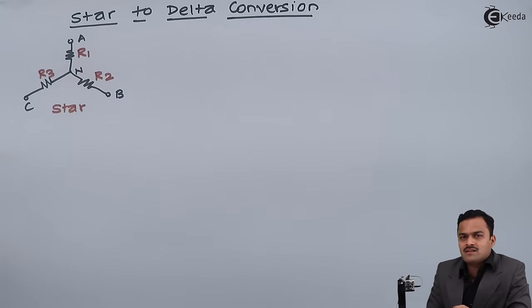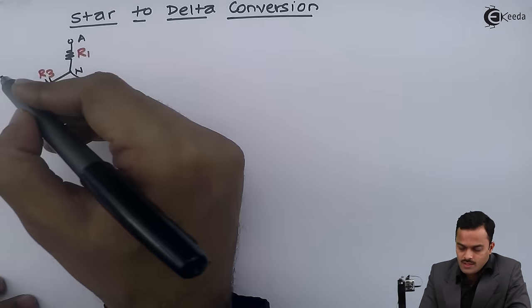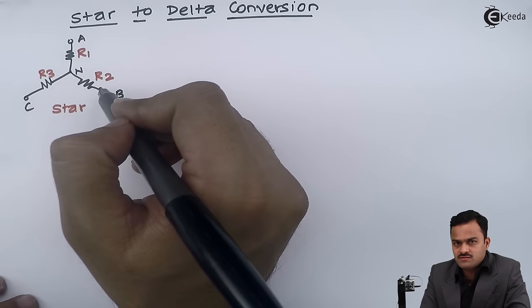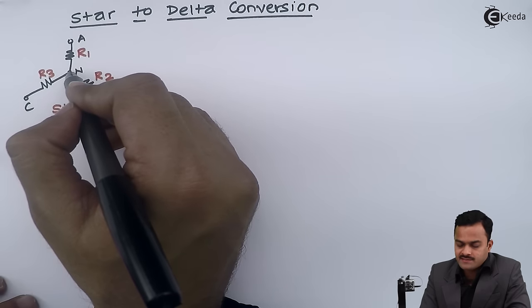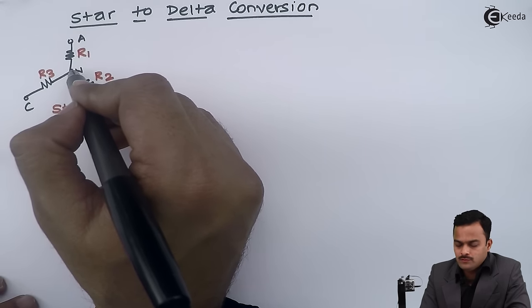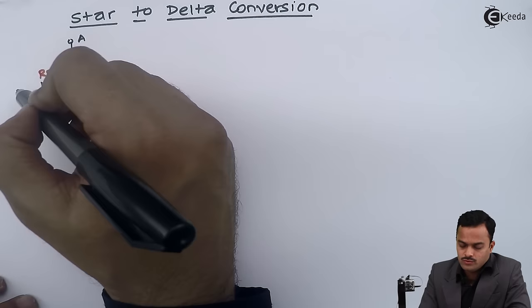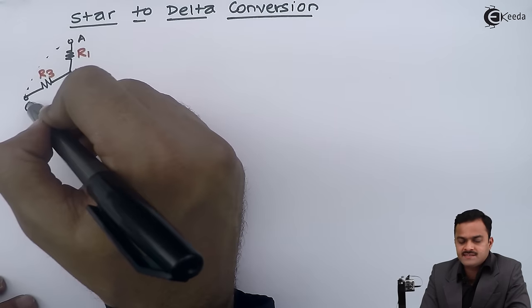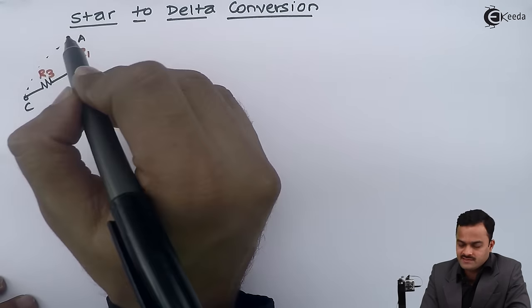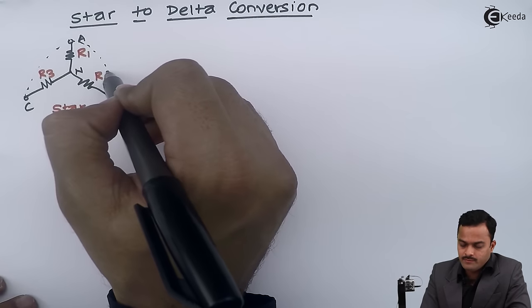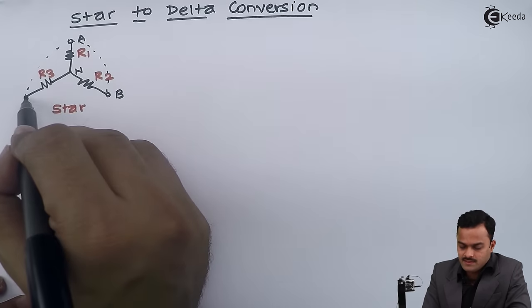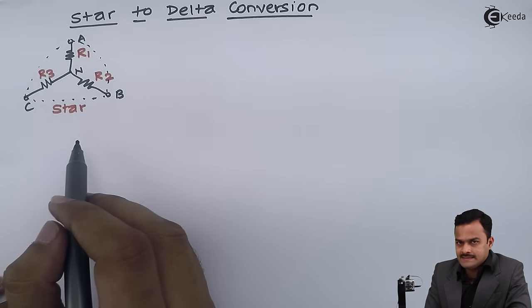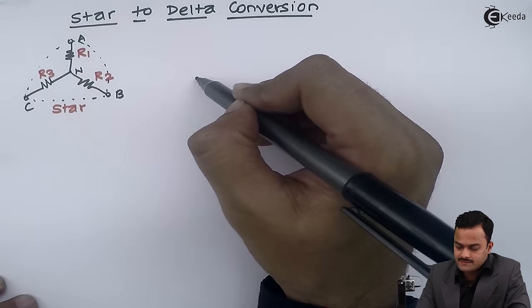This star has to be converted into an equivalent delta. So how to convert star into delta? All the open ends will be closed and the neutral point will be removed. You will get an equivalent delta where between A and C there will be a resistor, between A and B there will be another resistor, and the third resistor will be between B and C.